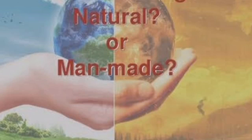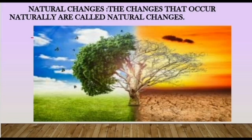Can you now classify the natural and the man-made changes you have listed as useful and harmful changes? Natural changes can be defined as a type of change that occur on their own naturally without the interference of human beings. Wind, rain, and earthquake are all examples of natural processes which impact an ecosystem.